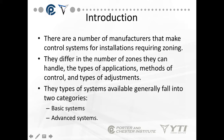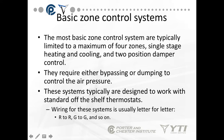There are different manufacturers that make control systems for the installations required for zoning. They differ in the number of zones they can handle, the different types of application, method of control, and types of adjustments. The types of systems generally fall into two categories: basic systems and advanced systems.